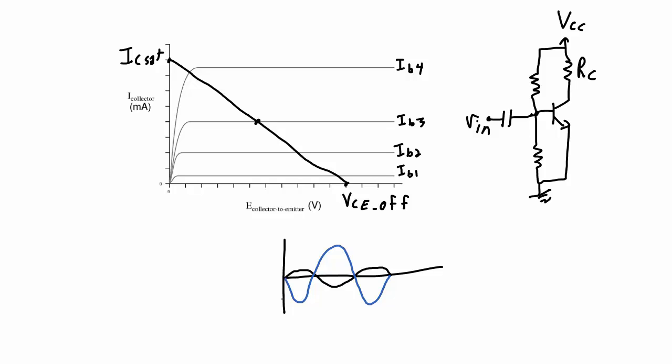A couple of key advantages of a class A amplifier. First is the circuit simplicity. So there is only one BJT in this very basic class A amplifier. Another advantage is that there is no crossover distortion. In class B amplifier, class AB amplifier video, I show you what crossover distortion is.